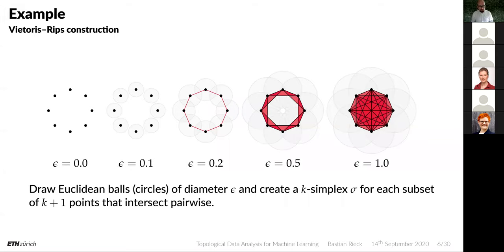We draw Euclidean balls of diameter epsilon and create a k-simplex sigma for each subset of k+1 points that intersect in a pairwise fashion. You can already see that this looks roughly circular. If you have the right threshold, you see the circular structure here in the simplicial complex — it has one hole like a circle, and this hole remains for a while, and then at some point it is closed. This is the whole idea of this calculation.